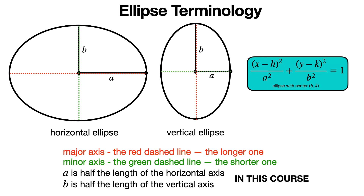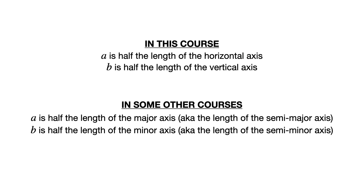The terms major and minor axis are a little different. Major refers to the longer one and minor to the shorter one. So in a horizontal ellipse, a refers to half the major axis, and in a vertical ellipse, b refers to half the major axis. In other courses a might always mean half the major axis, but in this course a is always half the horizontal axis and b is always half the vertical axis.